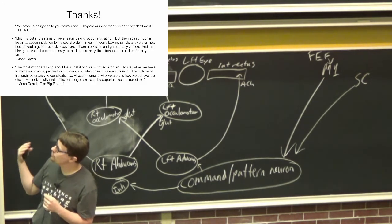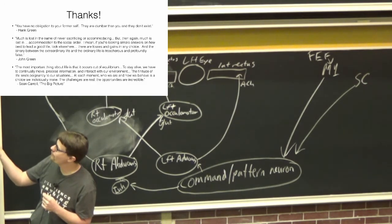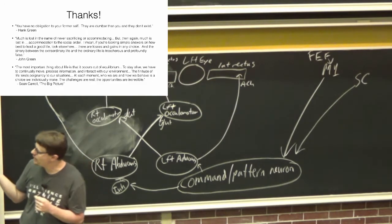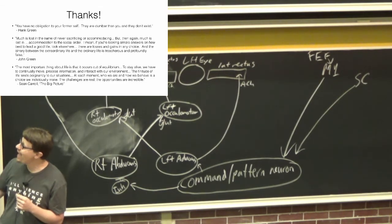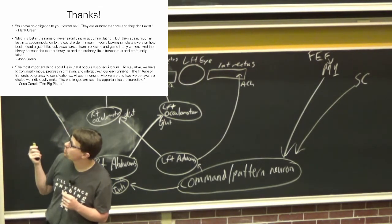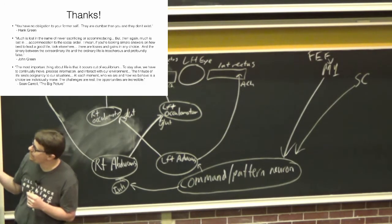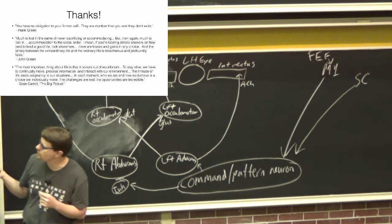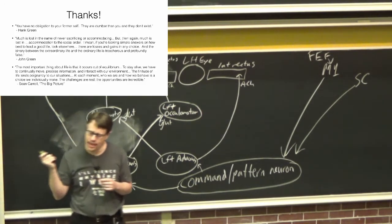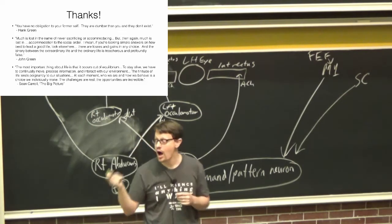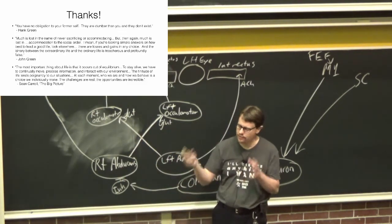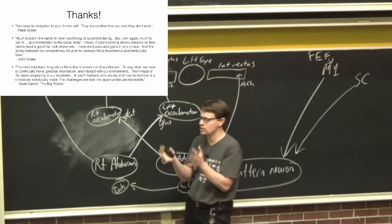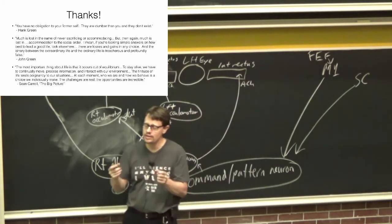One last quote: The most important thing about life is that it occurs out of equilibrium. To stay alive we need to continually process information and interact with our environment. Our lives are finite, and the finite nature of our lives creates poignancy in situations. At every moment we decide who we are and how we behave, and that's a choice that we individually make. There are real challenges and real opportunities in life.